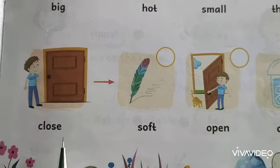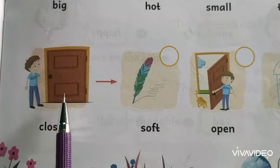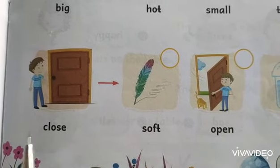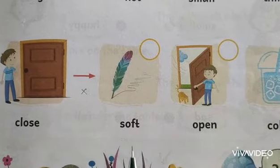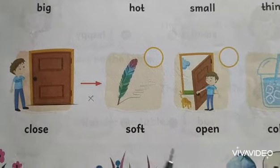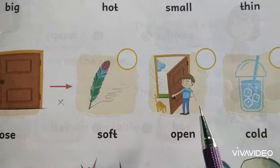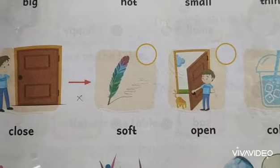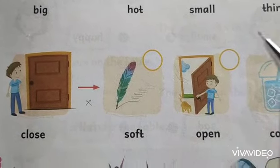Move on to the third picture. The picture shows a boy standing in front of a door and the door is close — C-L-O-S-E. So what is the opposite of close? The first option shows soft — S-O-F-T — a feather is very soft. Is that correct? No. Then the second picture shows another boy standing in front of the door and the door is open — O-P-E-N. So close and open: what is the opposite of close? Open. Yes, it's correct.